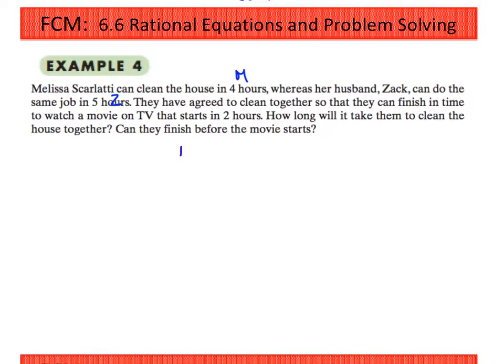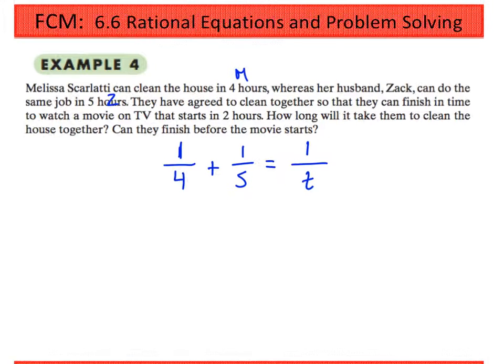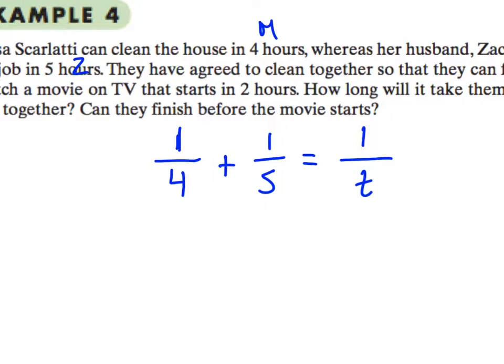Okay, so Melissa can do one-fourth of the job in an hour. Zach can do one-fifth of the job in an hour. In other words, one job in four hours, one job in five hours. Together, they can clean one house in T hours. That's maybe a better way to think about this. One job in four hours, one job in five hours. Together, they can clean one house in T hours. And go ahead and see if you can solve this one. Now that you have the equation, see if you can solve it. Pause the video and try it for yourself.